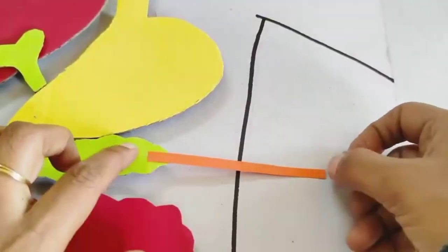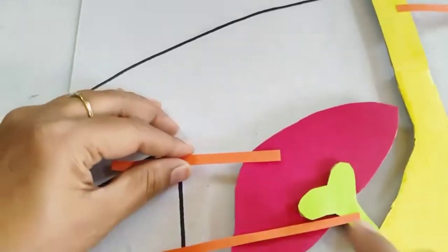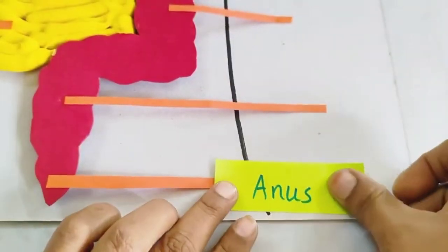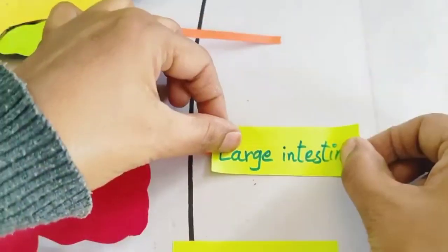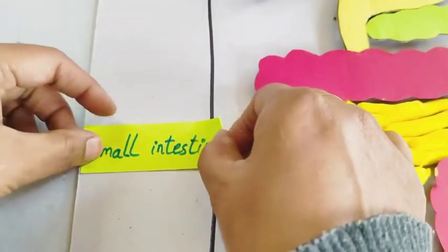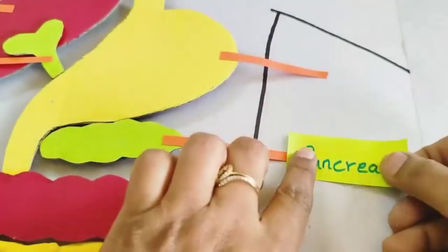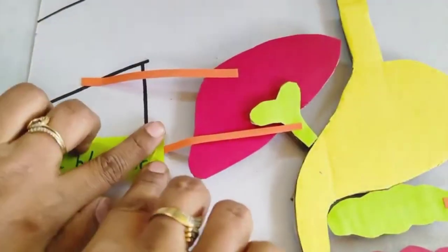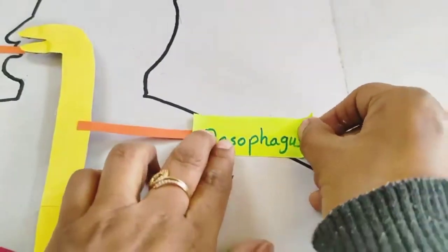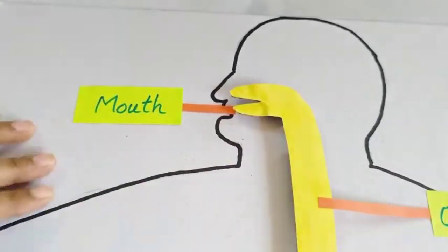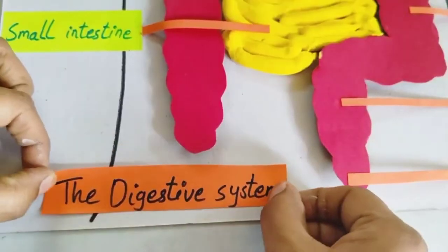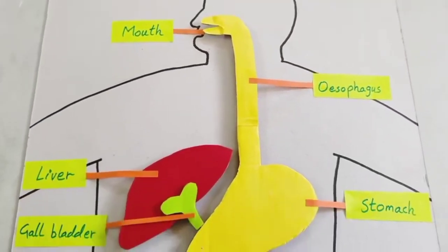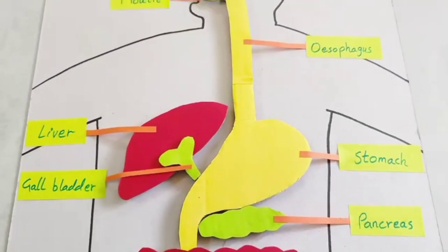So what do the parts of the human digestive system mean? All the parts of the human: that is the anus, that is the rectum, small intestine. Then we have the pancreas, then we have the stomach, then we have the gallbladder, then we have the liver. We have the oesophagus or the gullet, then we have the mouth.